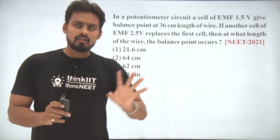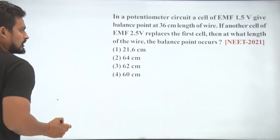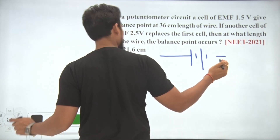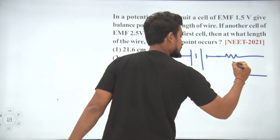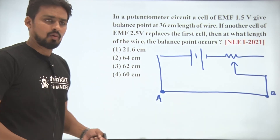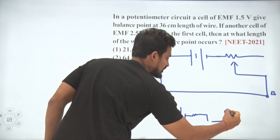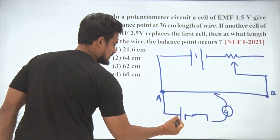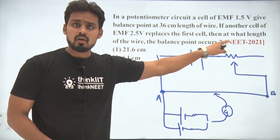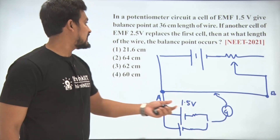This question involves a very basic application of the potentiometer. We will draw the diagram: a potentiometer battery, a rheostat strip, and the potentiometer wire from A to B. We have a cell with internal resistance, a galvanometer, and a jockey. Initially the external cell is 1.5 volt, and this is balanced at a length of 36 centimeter.